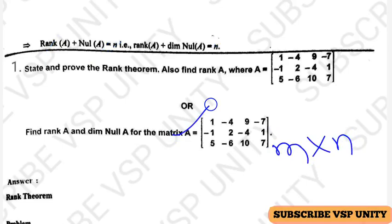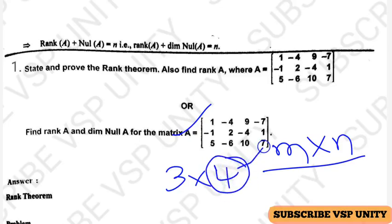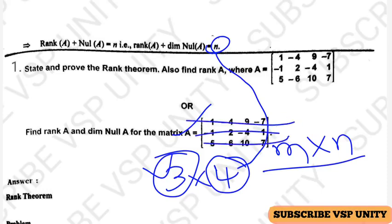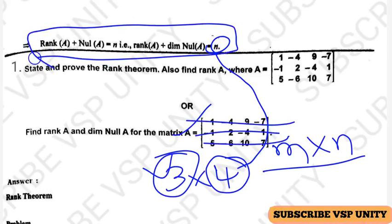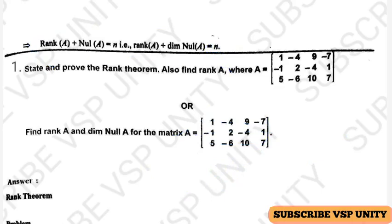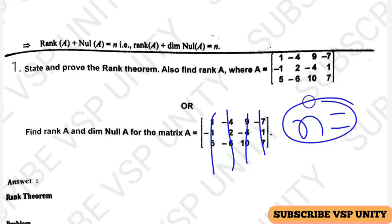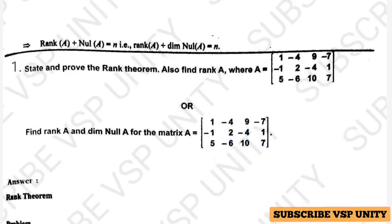It is in the form of M cross N — 3 by 4. This 4 is what we have to take in place of N. Why are we not taking this 3? This 3 is the number of rows. But this proof is completely depending on the columns, as we discussed in the proof of the rank theorem. That is why here we have to take only the number of columns as N. N means number of columns of a given matrix. Remember this. Now I can enter into the problem.